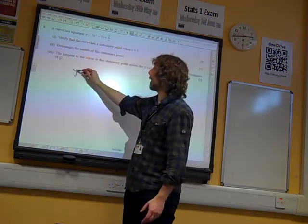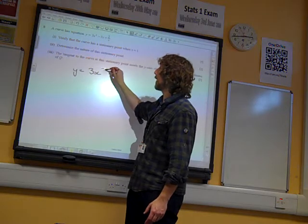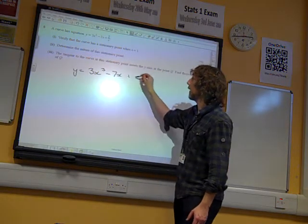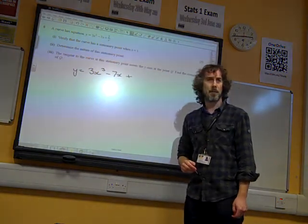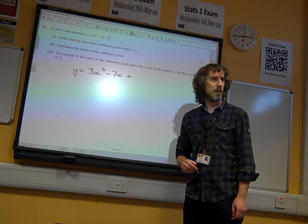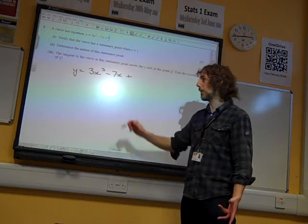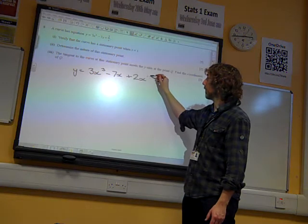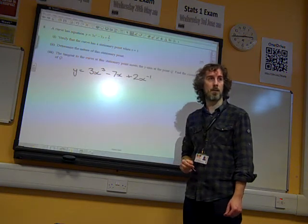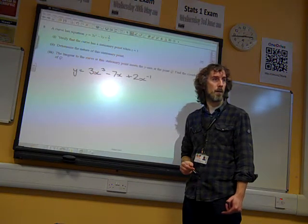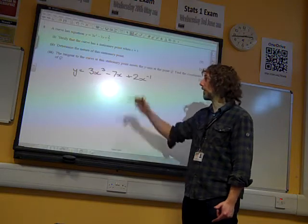And in the same way, before we do anything, we need to think of this as 3x cubed minus 7x. Now 2 over x, that should be easy to write, but a few of us made a mistake with that. It's 2x to the minus 1, isn't it? It's 2 times 1 over x. So it's 2x to the minus 1 when we write it in index form.